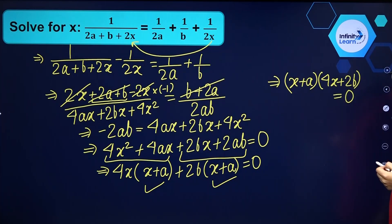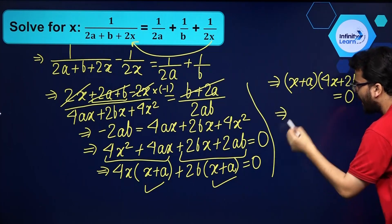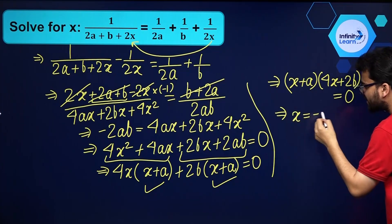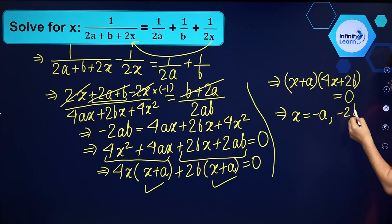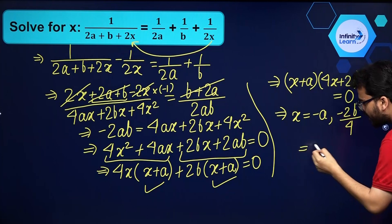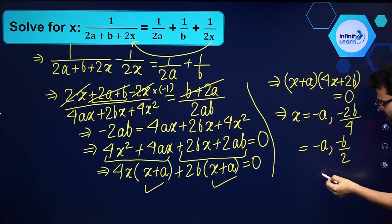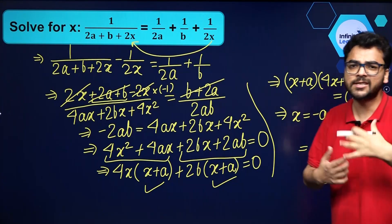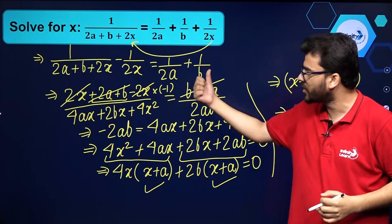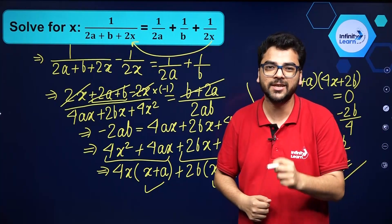So what are the two roots of this quadratic equation? x will be equal to minus a, and the other root will be minus 2b upon 4, or if you further simplify, minus a comma minus b by 2. So therefore these are the roots of this quadratic equation, and you can solve it easily using this trick. I hope this is clear to every student watching this video.